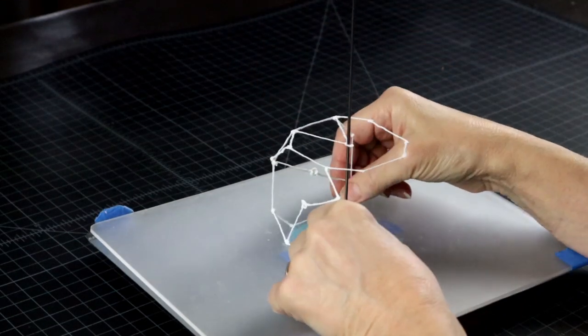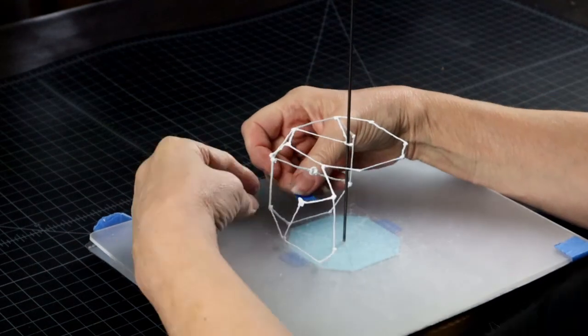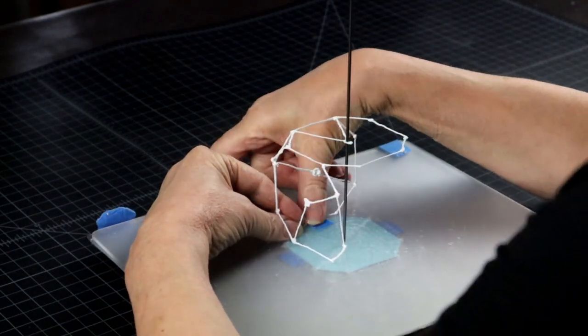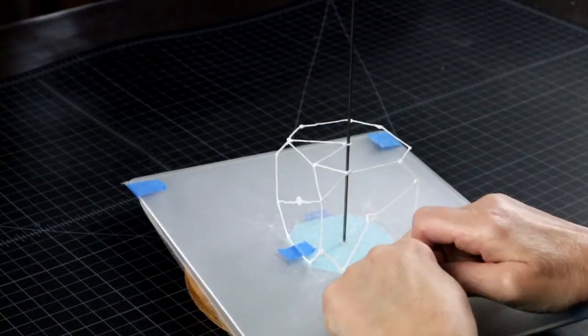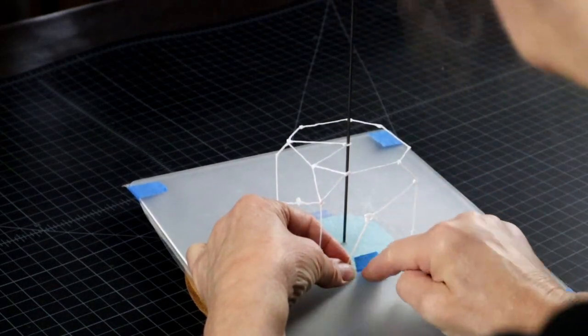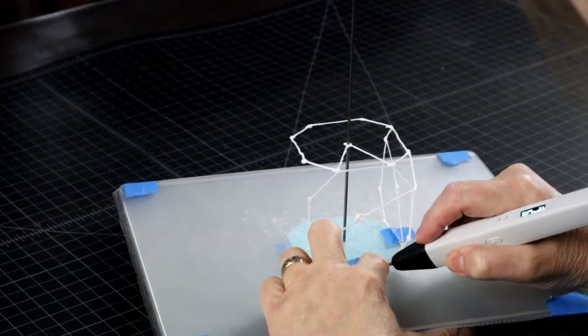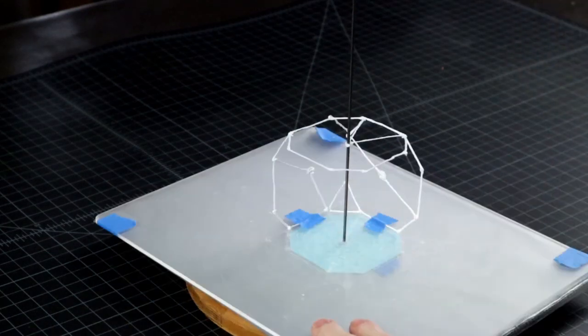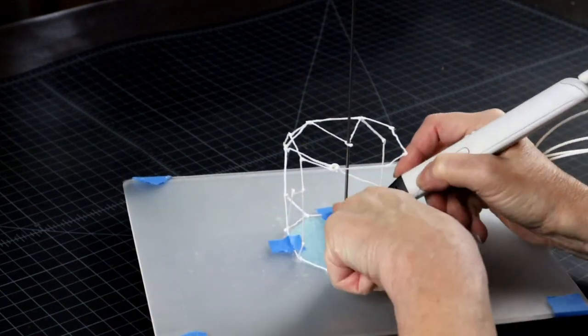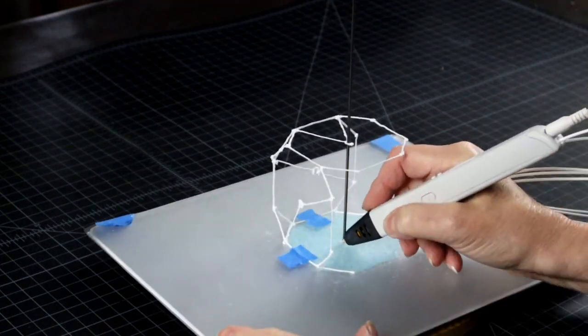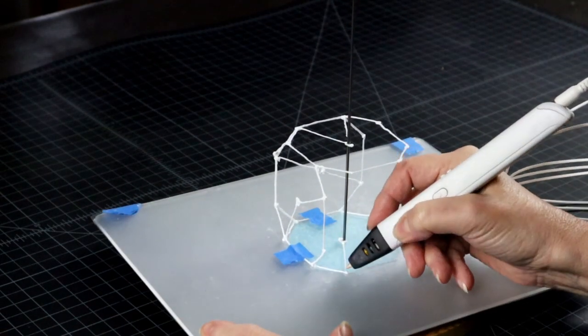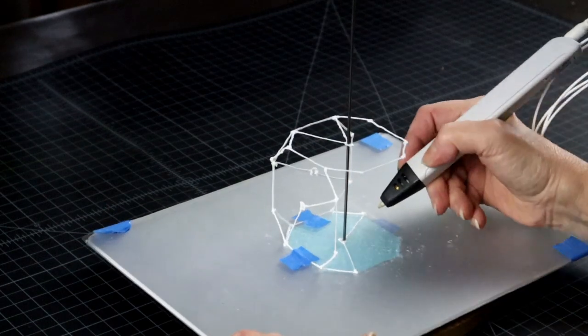Once three sides are completed, you will start threading the structure onto the centering wire to keep the opposite faces perfectly aligned. At this point, you can stop connecting the new faces to the center. We already have all the supports we need.